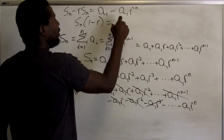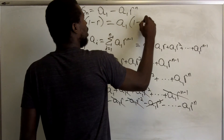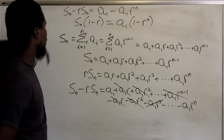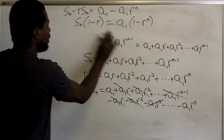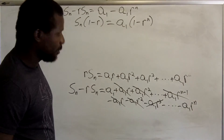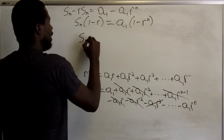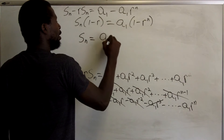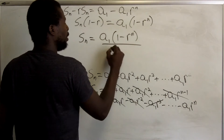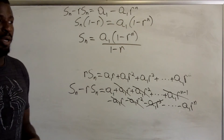So we have S_n times (1 minus r) on the left, and a1 times (1 minus r^n) on the right. Dividing both sides by (1 minus r), we get S_n equals a1 times (1 minus r^n) divided by (1 minus r). This is the formula for the nth partial sum of a finite geometric sequence.